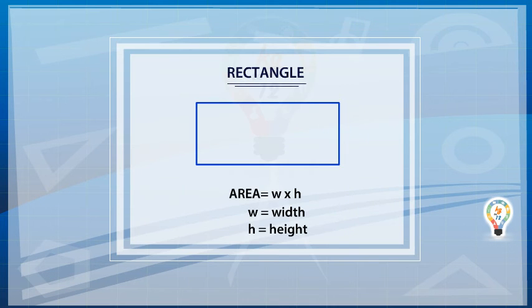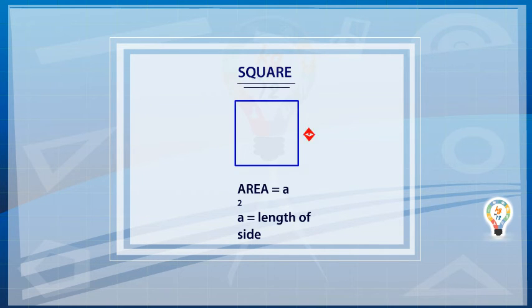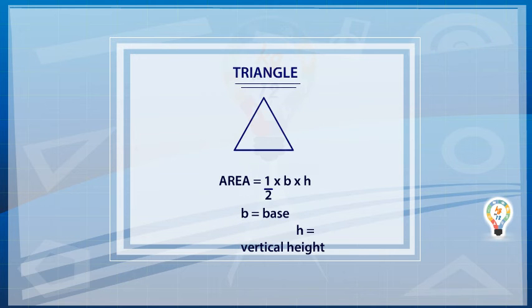The area of a rectangle is the width times the height. The area of a square is the side length squared. If A is the side of a square, then area equals A squared.